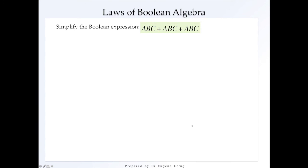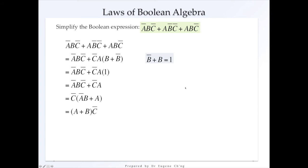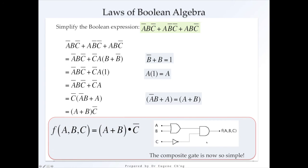So something that complex is simplified so that they become a composite gate that is quite simple.